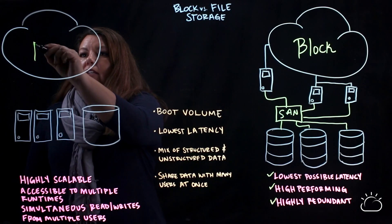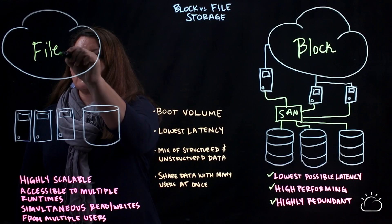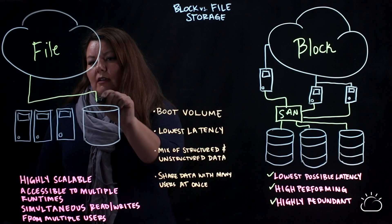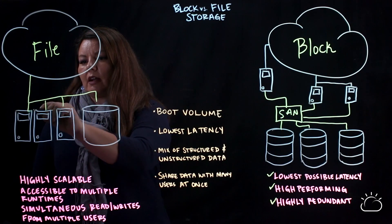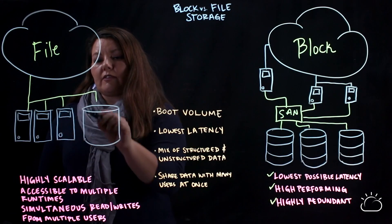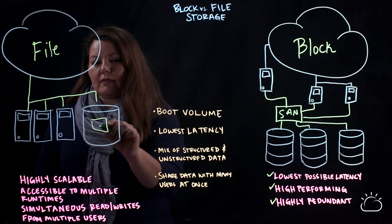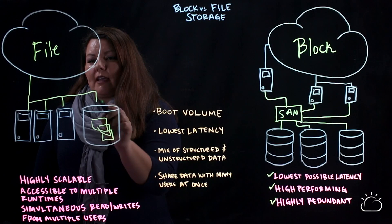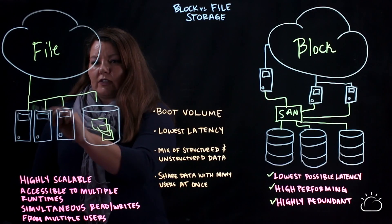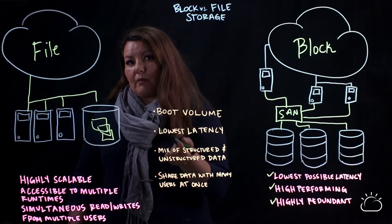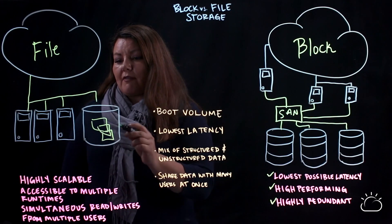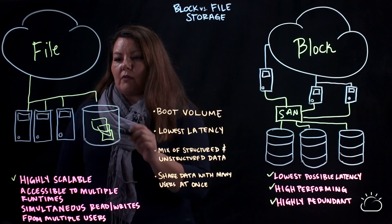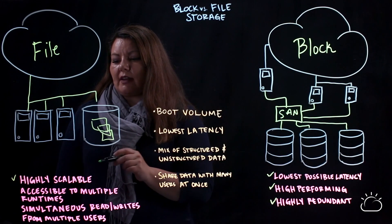File storage is connected to your servers a little differently than block storage. Everything is connected on the same network, so you have all of your files or your file share, and they can all be accessed on the same network by any of the servers on that network — so it's network attached storage. File storage is highly scalable, so you can have multiple file shares on your network and have all of your servers attached to that at one time.